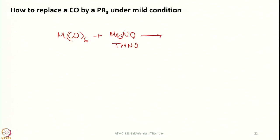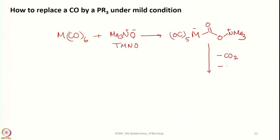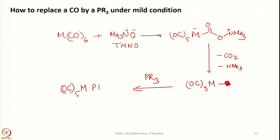It forms an intermediate where the bond is polarized, giving a compound with positive and negative charge. What happens next is it readily loses a molecule of carbon dioxide and a molecule of trimethylamine to generate a vacant site on the metal. Now if we add a tertiary phosphine at this stage, we can very conveniently make a phosphine complex. One can do this stepwise — add one more equivalent of trimethylamine N-oxide to substitute one more carbon monoxide, and keep on doing so.